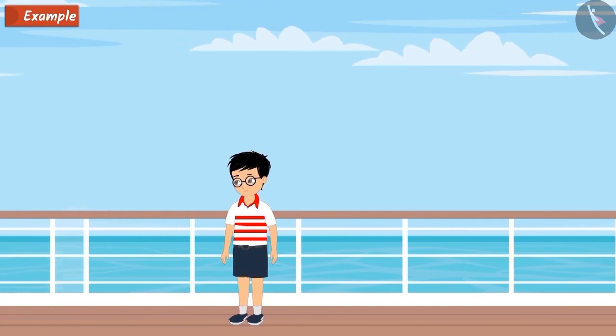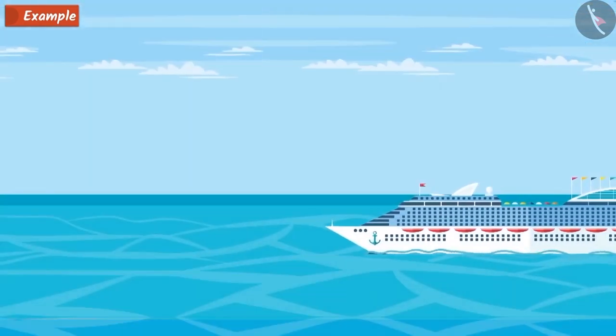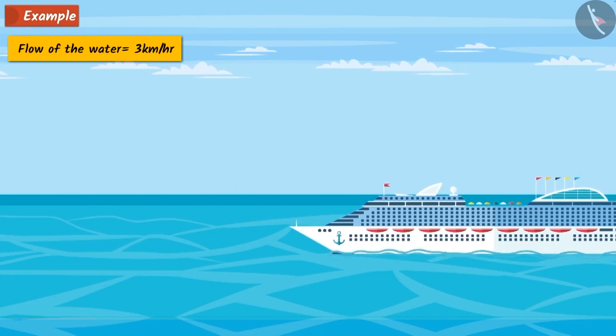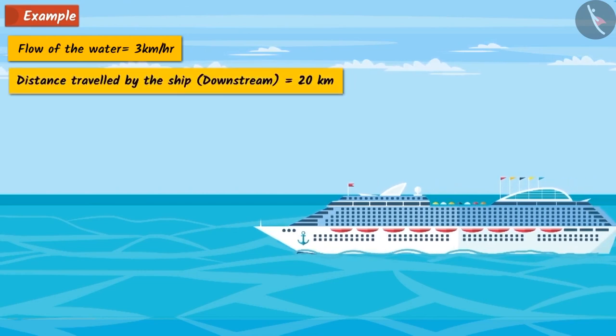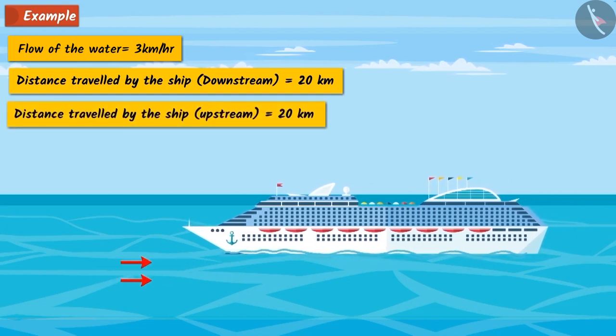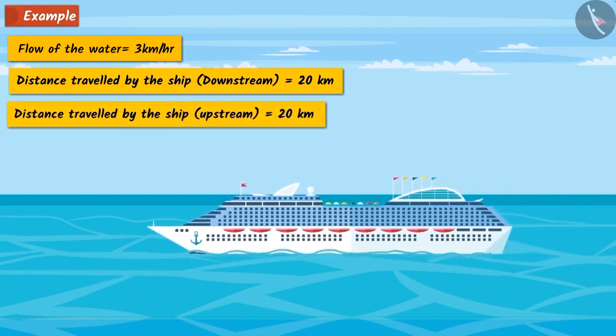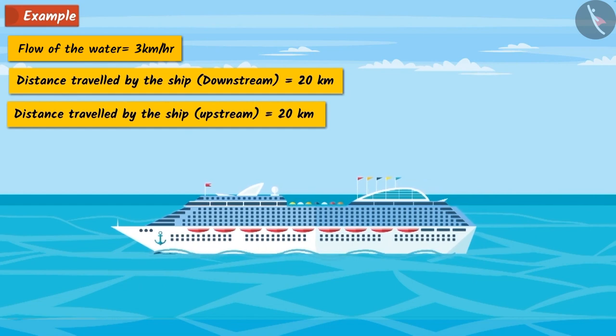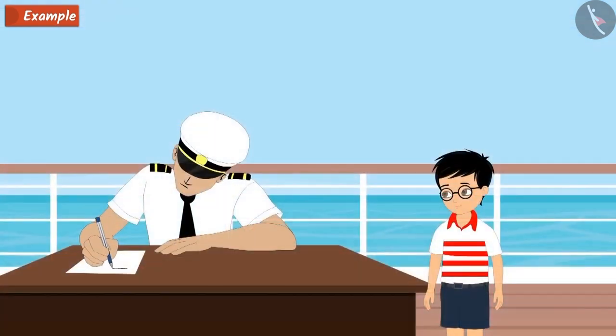Tarun spent four hours on a ship, where the water flow was 3 km per hour and the ship ran 20 km downstream and 20 km upstream. When he came back, he sees the captain writing some math equation on paper. When he asks him, what are you doing?